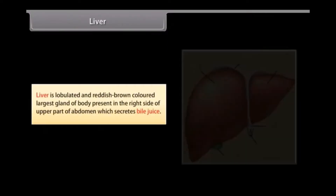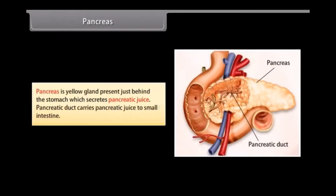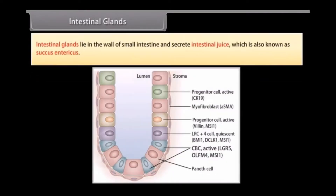Liver is the largest gland of the body — lobulated and reddish-brown in color, present on the right side of the upper abdomen — and it secretes bile juice. Pancreas is a yellow gland present just behind the stomach which secretes pancreatic juice; the pancreatic duct carries this juice to the small intestine. Intestinal glands lie in the wall of the small intestine and secrete intestinal juice, also known as succus entericus.